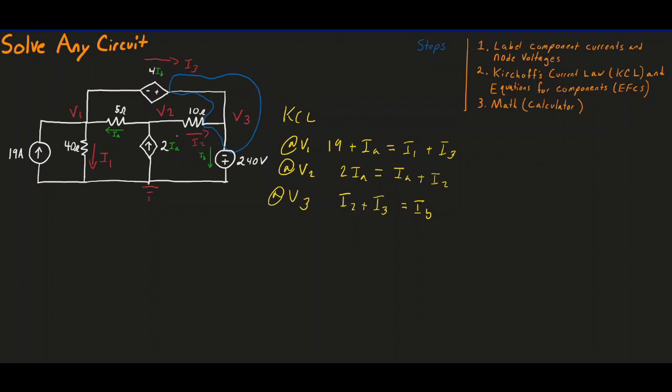Now we did not write a KCL equation for our ground node. This is because it would actually be a redundant equation. It doesn't help you solve the system at the very end. So generally, you can omit writing the KCL equation for your ground node.